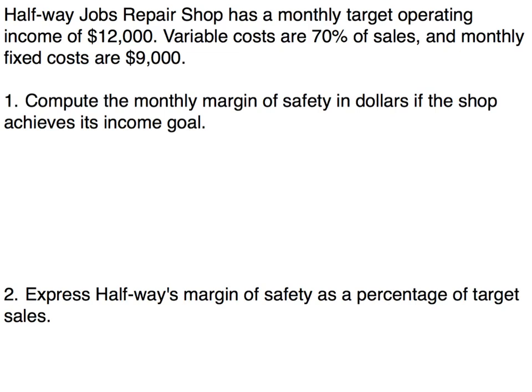Let's jump right into an example. Halfway Jobs Repair Shop has a monthly target operating income of $12,000. Variable costs are 70% of sales and monthly fixed costs are $9,000. The first thing we need to do is compute the monthly margin of safety in dollars if the shop achieves its income goal. We start with our equation: sales minus break-even sales equals margin of safety.